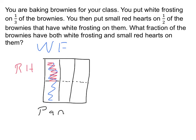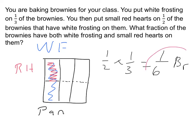Mathematically, we also see that we did something with a half of a third. So mathematically, we could solve this by taking one-half times one-third. We do that arithmetic — that's just one-sixth of the brownies. There's our answer.